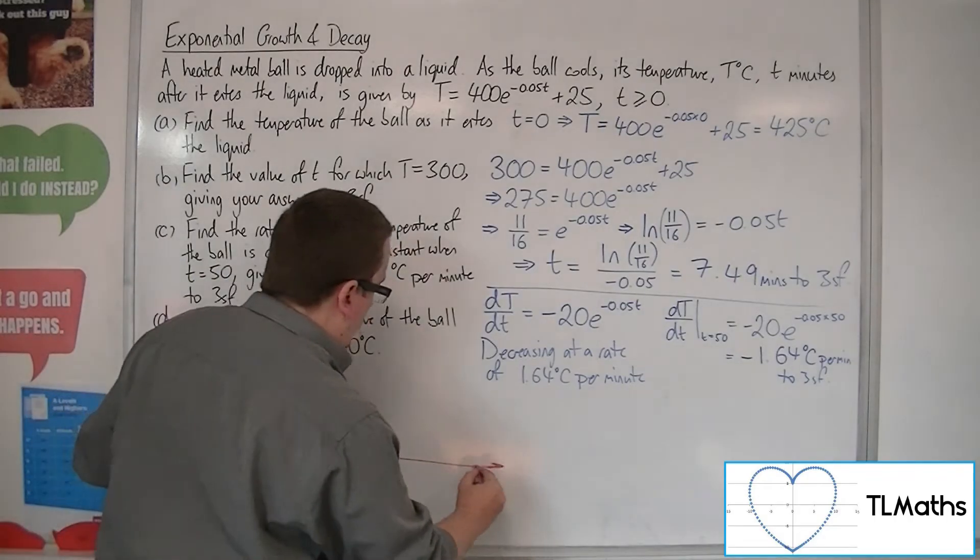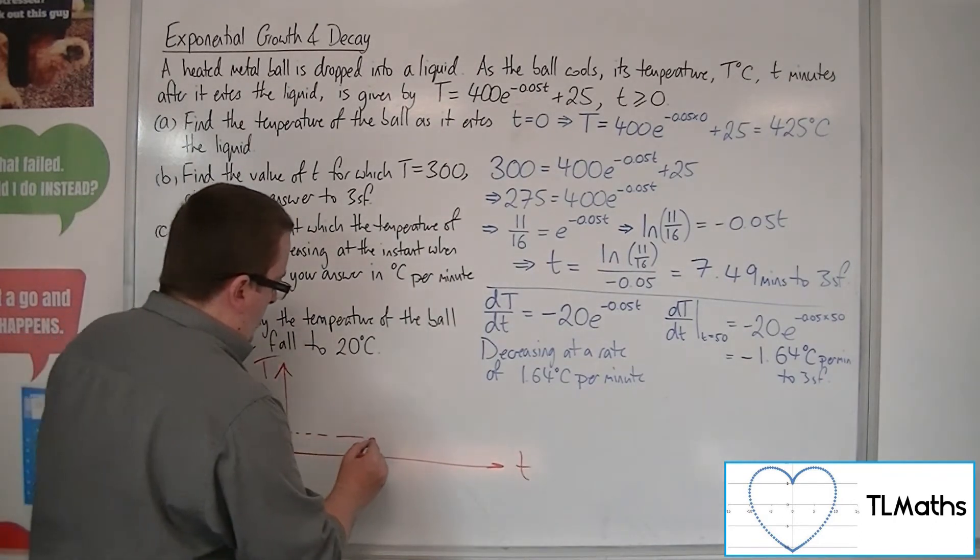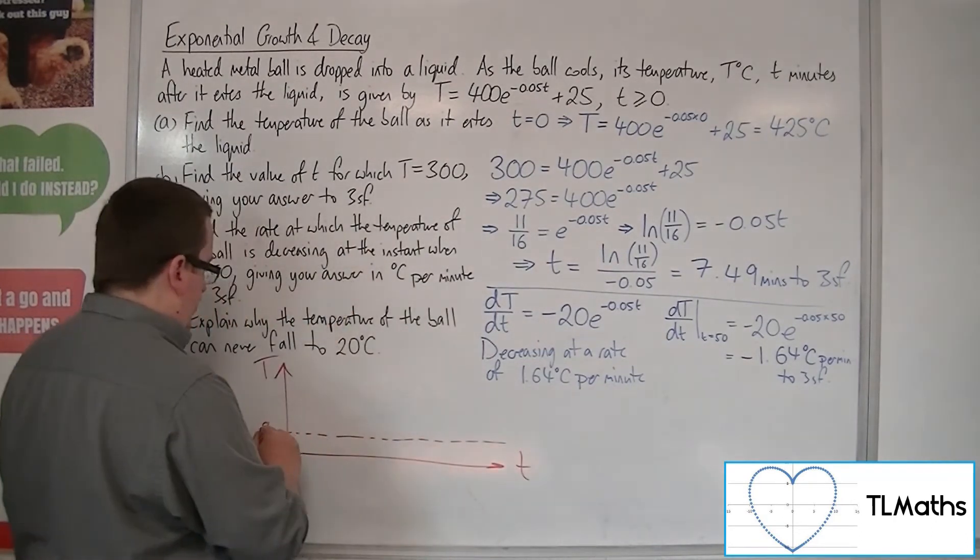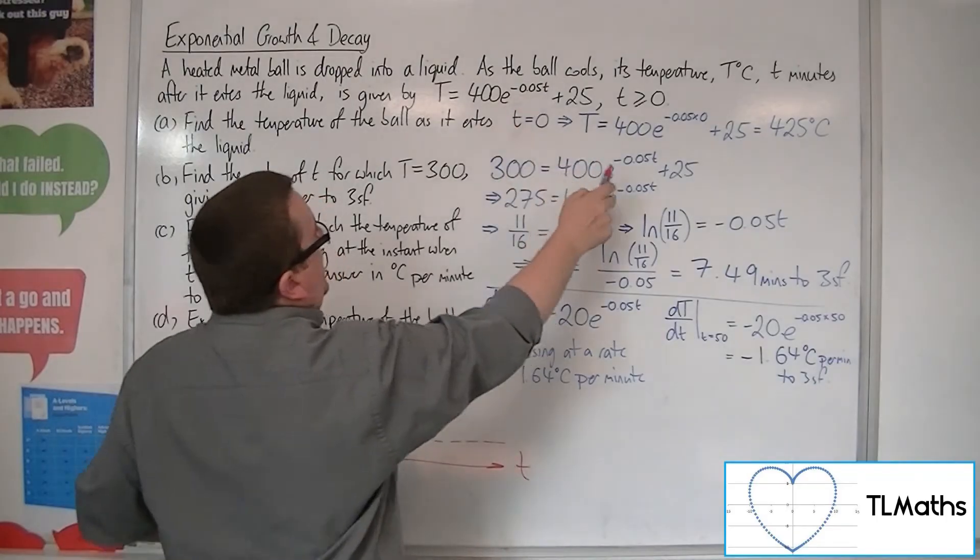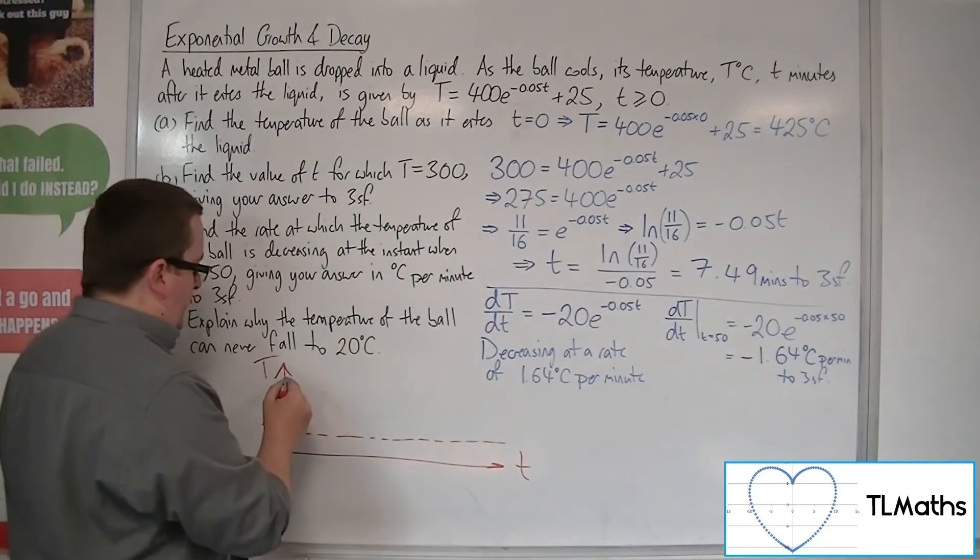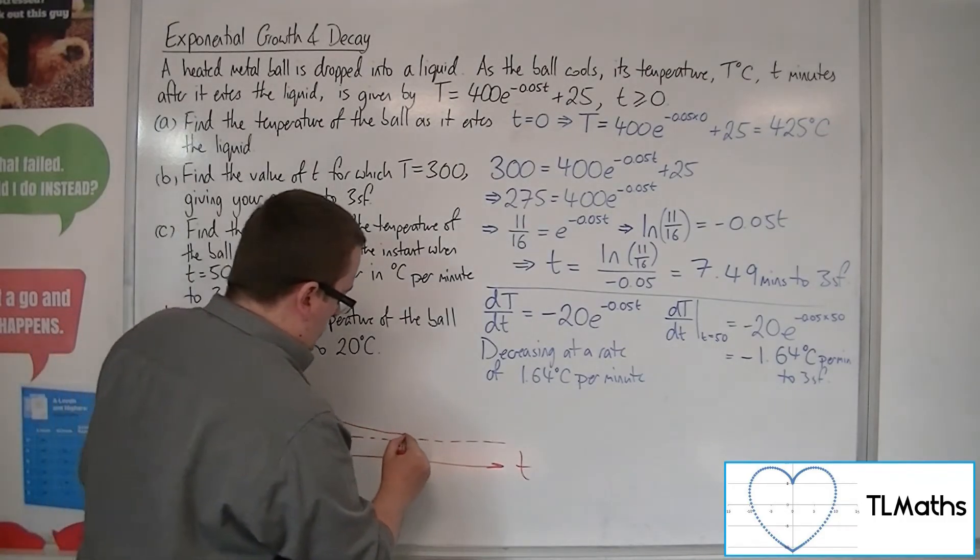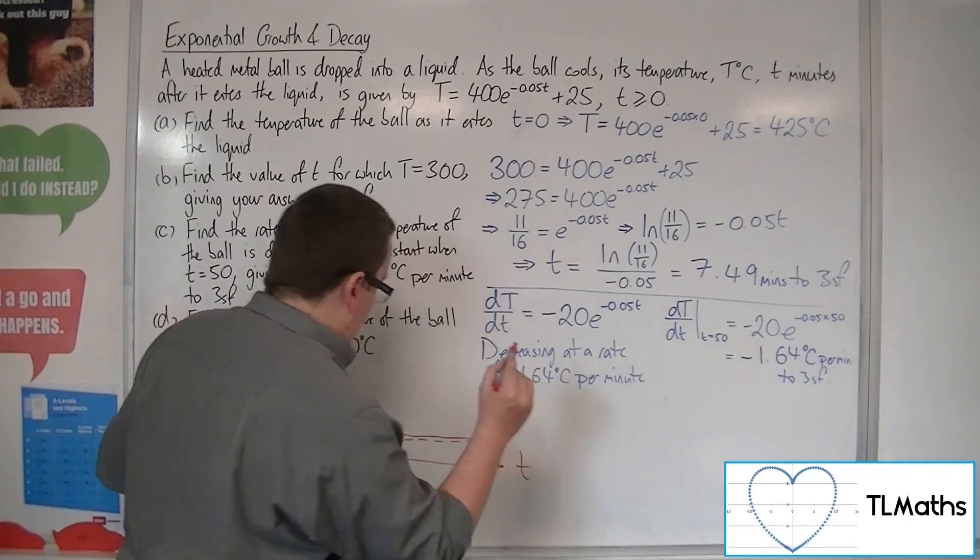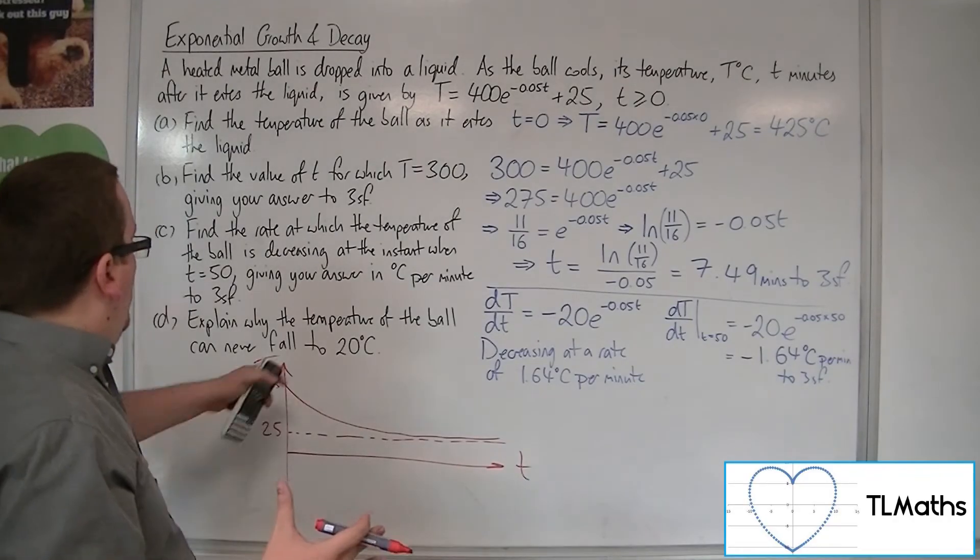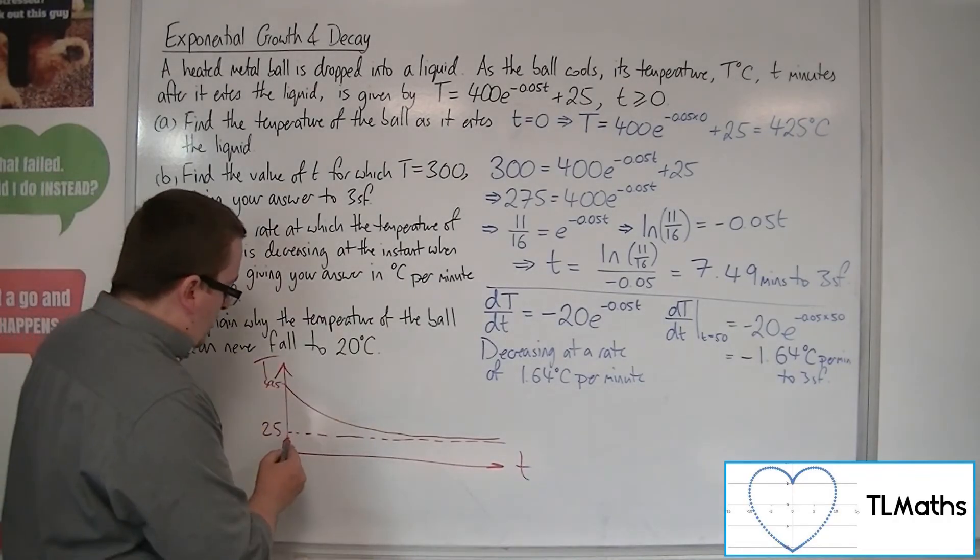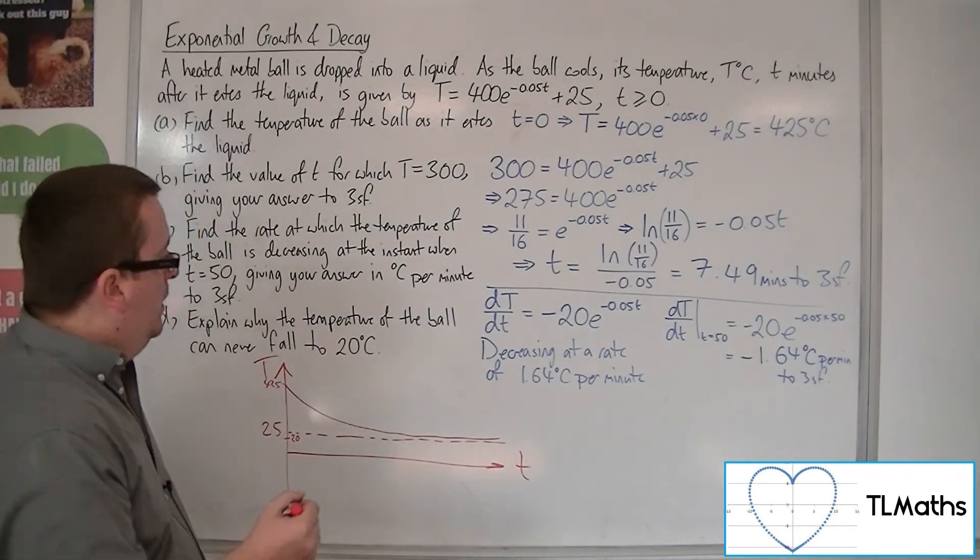So, visually, what we're talking about here is if this is time and this is the temperature, then we've got this 25 degrees centigrade. But this function, when we're at 0, remember, at 425 up here. So, as the time goes on, the temperature gets closer and closer and closer to 25, but will never reach it. So, when it's talking about 20 degrees centigrade, well, of course, it will never reach 20 degrees centigrade, because that's below the 25.